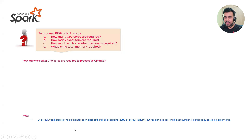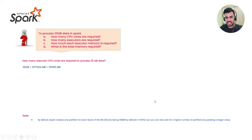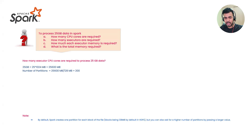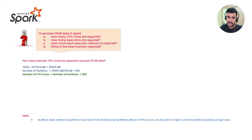By default, Spark creates one partition for each block. Taking HDFS as an example: 25GB equals 25 × 1024 MB = 25,600 MB. Divide by 128 MB (default block size): number of partitions = 25,600 ÷ 128 = 200. So the required number of cores equals the number of partitions — 200 cores are required to process 25GB in parallel.